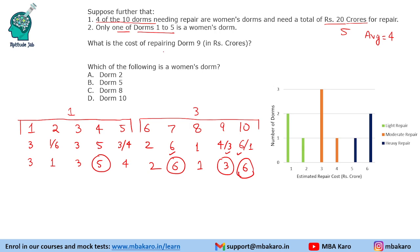The cost of repairing DOM 9 is 3 crores. For the question asking which of the following is a women's DOM — among options 4, 7, 9, 10 — DOM 10 is a women's DOM. This completes the solution to the set and answers to all the questions.